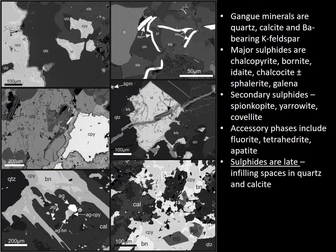SEM images allowed us to further constrain the textural relationships between the minerals. Gangue minerals were identified to be quartz, calcite, and barium-bearing feldspar. Major sulfides are chalcopyrite, bornite, idaite, chalcocite, sphalerite, and galena. Secondary sulfides were identified to be spionkopite, yarrowite, and covellite, and accessory phases included fluorite, tetrahedrite, and apatite. It is important to note that sulfides are consistently late — they are infilling spaces in quartz and calcite, as you can see in these images.